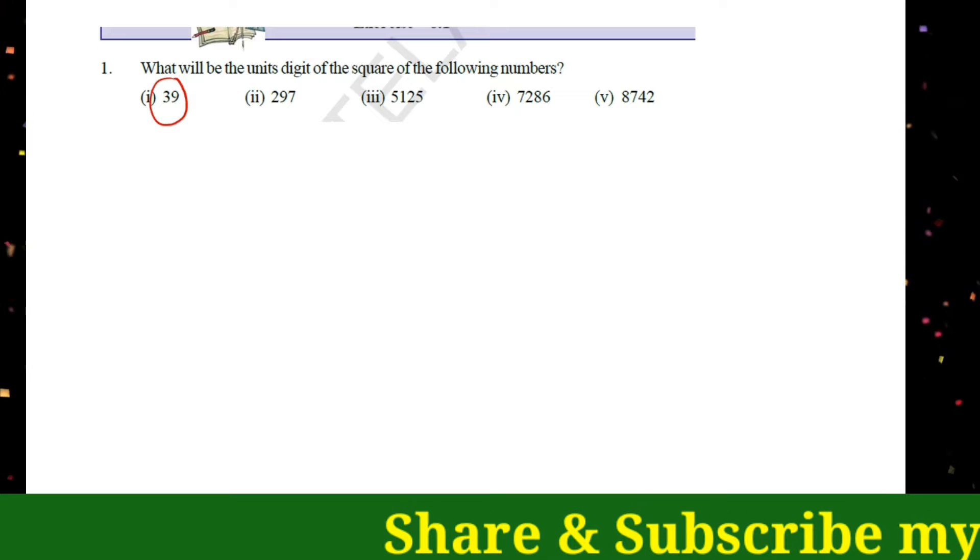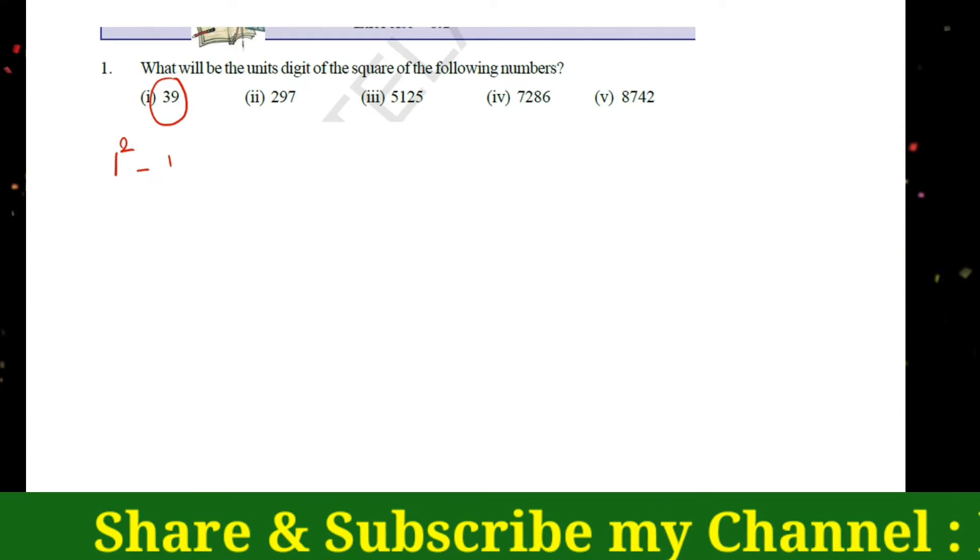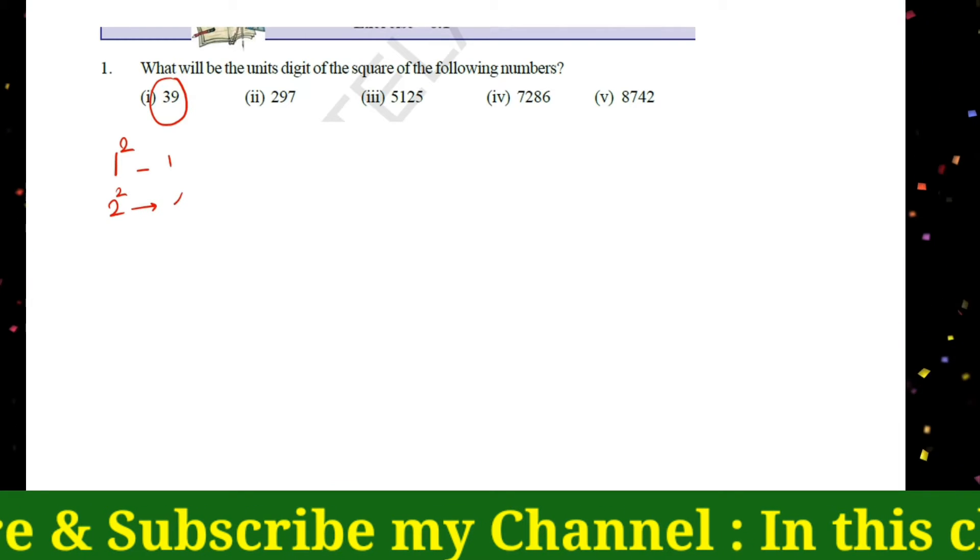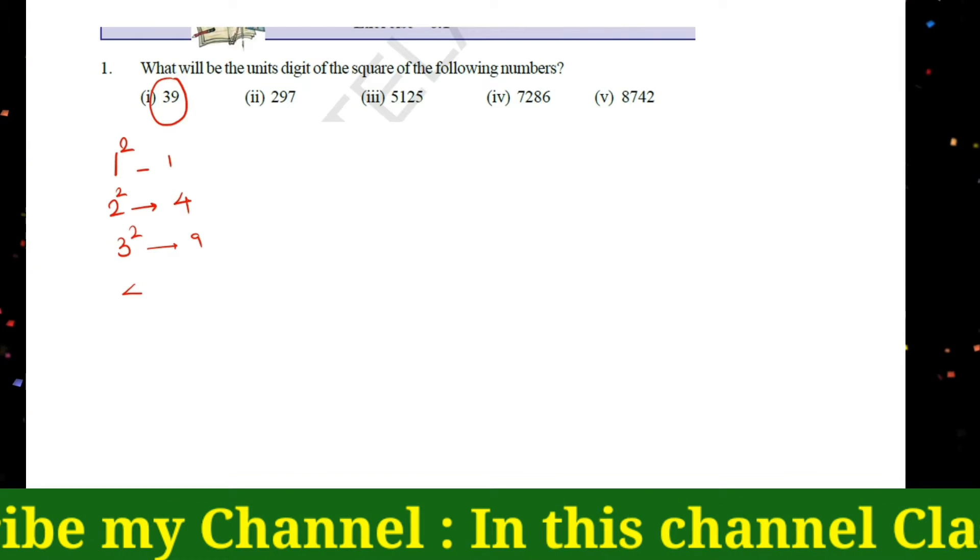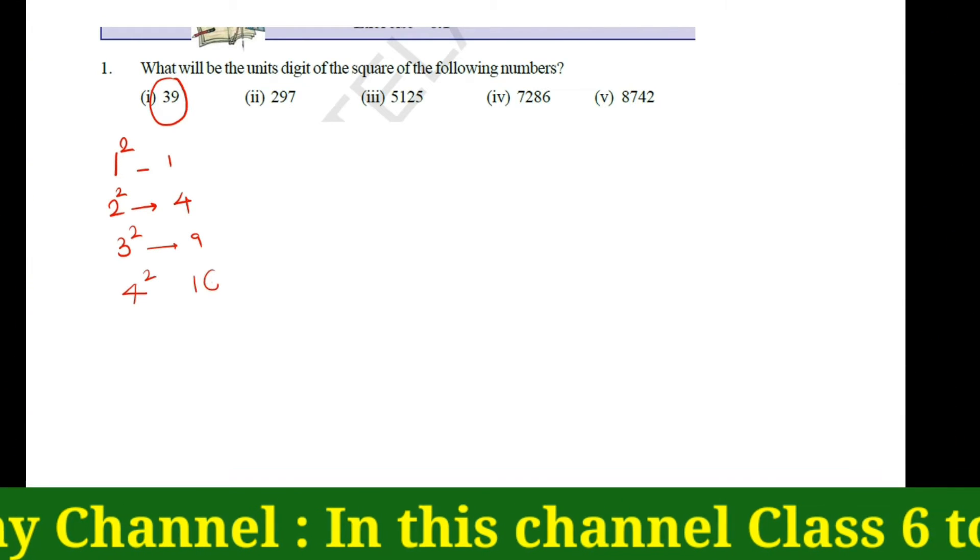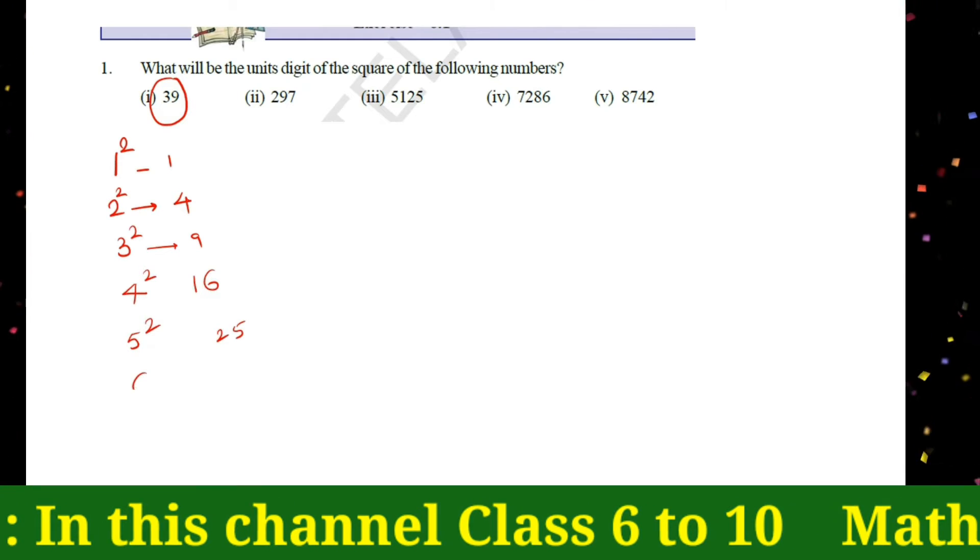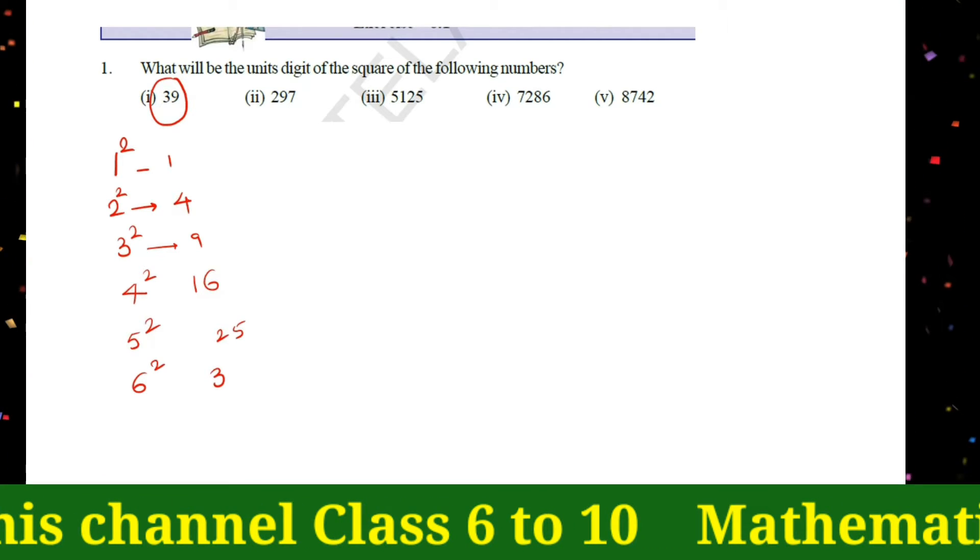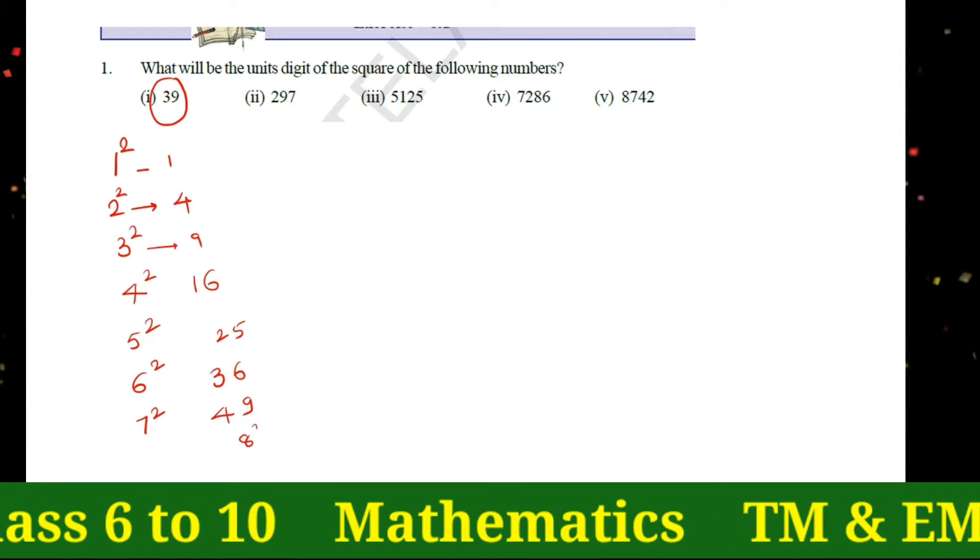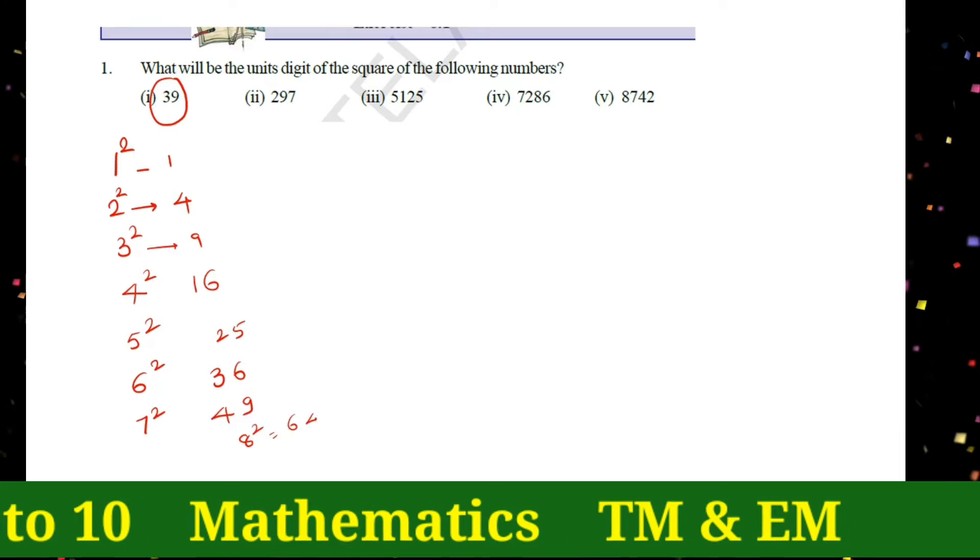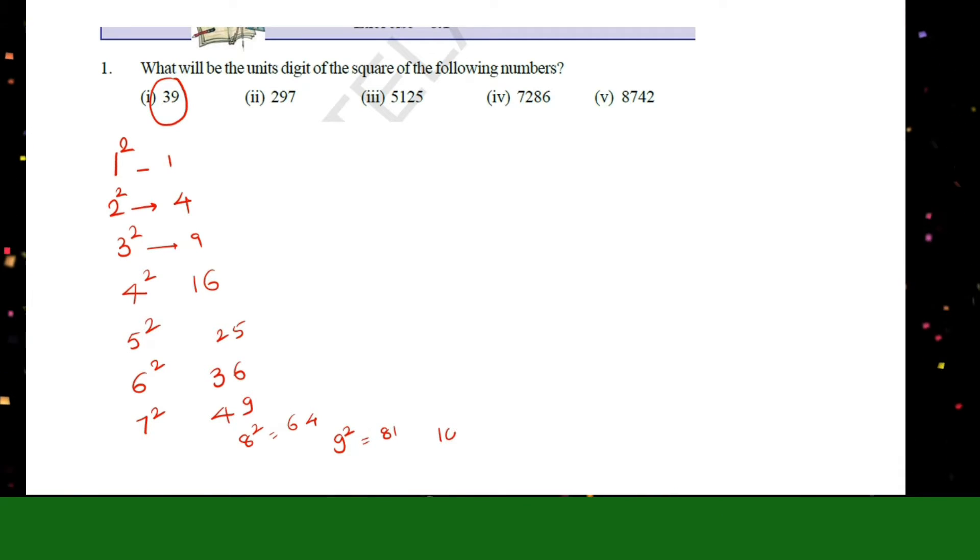We know that squares of numbers, for example: 1 square 1, 2 square 4, 3 square 9, 4 square 16, 5 square 25, 6 square 36, 7 square 49, 8 square 64, 9 square 81, and 10 square 100.